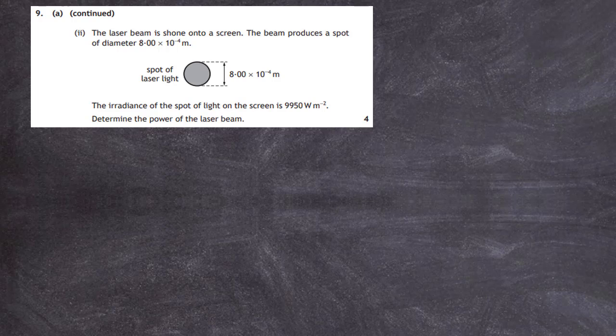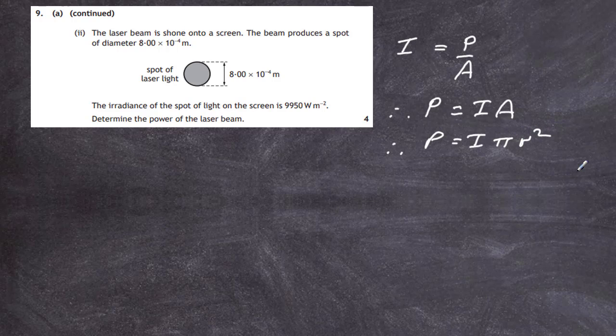We know that the irradiance of light equals the power arriving at a certain area per unit area. So we can rearrange that so the power of the laser equals I the irradiance times the area. We also know that the area equals pi r squared, so we've got irradiance times pi times r squared. We know the diameter is 8 times 10 to minus 4.